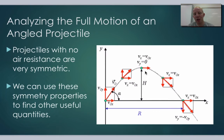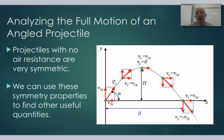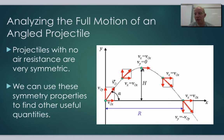Another very useful property is that the y velocity is zero at the very top of the projectile trajectory. Also, the time it reaches the top is exactly half the total flight time. So if we know when it hits the ground, the time to reach the peak is half of that.